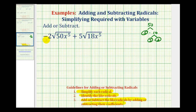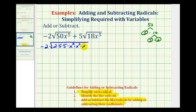So we can write the first term as negative 2 times the square root of 2 times 5 times 5. Then for x to the fifth, since we're looking for groups of two equal factors, we write x to the fifth as x squared times x squared times x. Notice how we have five factors of x, and x squared is a perfect square factor.